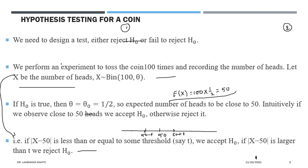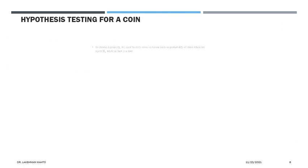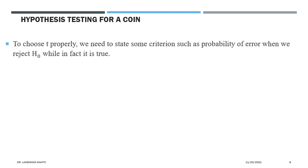Now we need to establish one systematic approach for how to select t. In order to choose t, we need to state some criterion — specifically the probability of error, or Type I error. Type I error is generally denoted by alpha, and it is very similar to what we discussed during confidence intervals — it relates to the probability of the rejection region. In hypothesis testing, alpha is called the significance level.